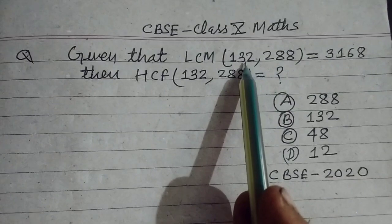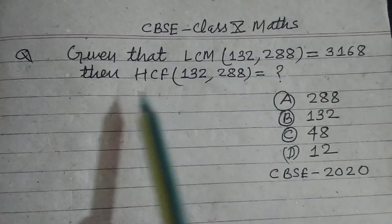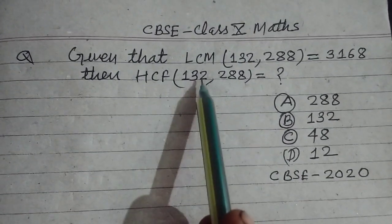Given that LCM of 132 and 288 is 3468, then HCF of these numbers is what?